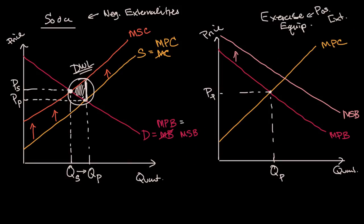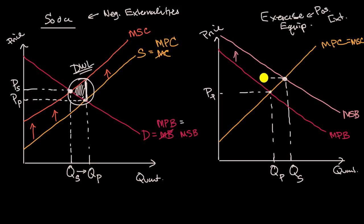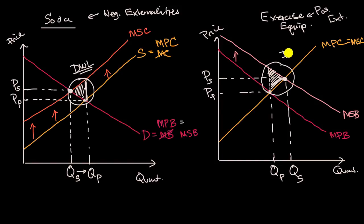Let's say the marginal social cost is the same as the marginal private cost curve. From society's point of view, society should want more and more exercise equipment produced as long as the marginal social benefit is higher than the marginal social cost. But as soon as the marginal social cost gets higher, that would create negative value. So the optimal quantity for society is higher than the private equilibrium quantity. If we just let private benefit and cost decide, we only produce this far — and from society's point of view, we lost out on all this quantity where marginal social benefit exceeds marginal social cost. So you have this deadweight loss.